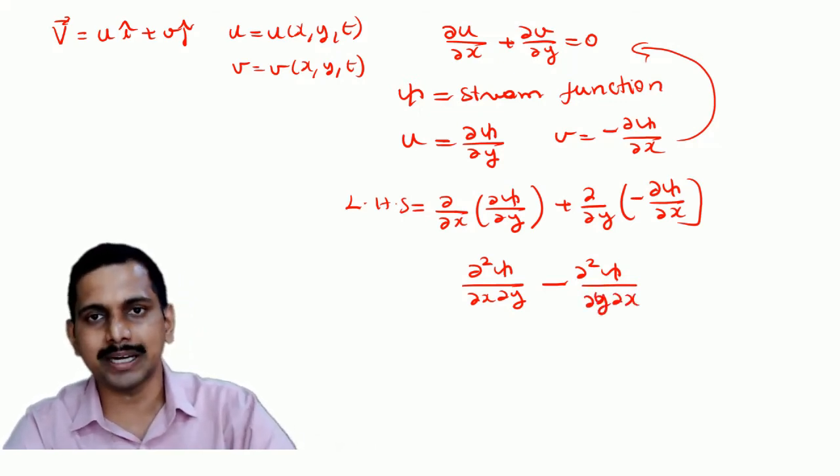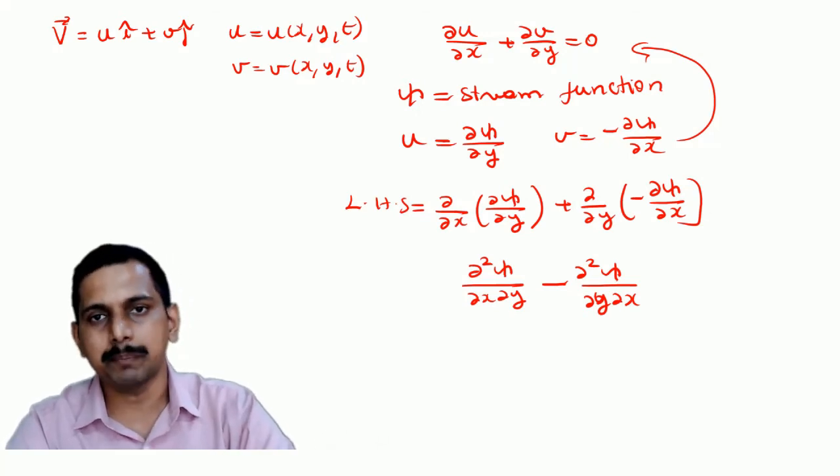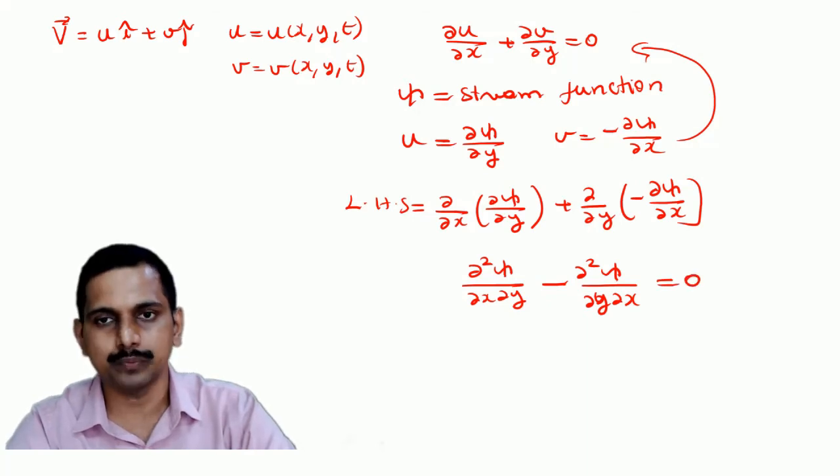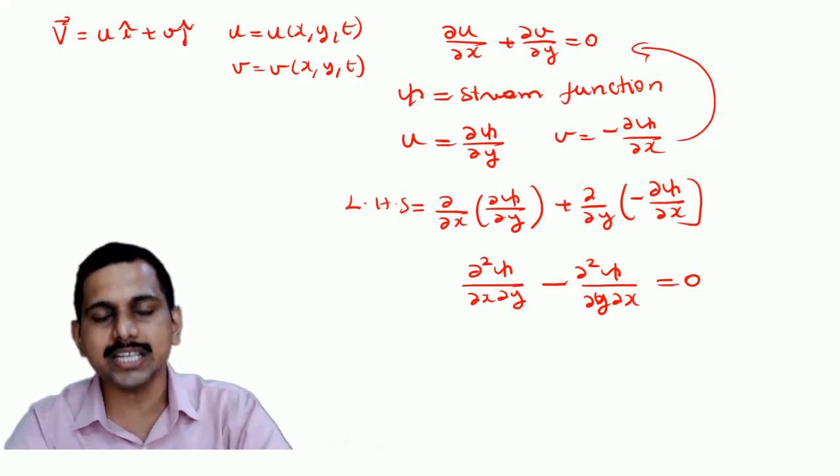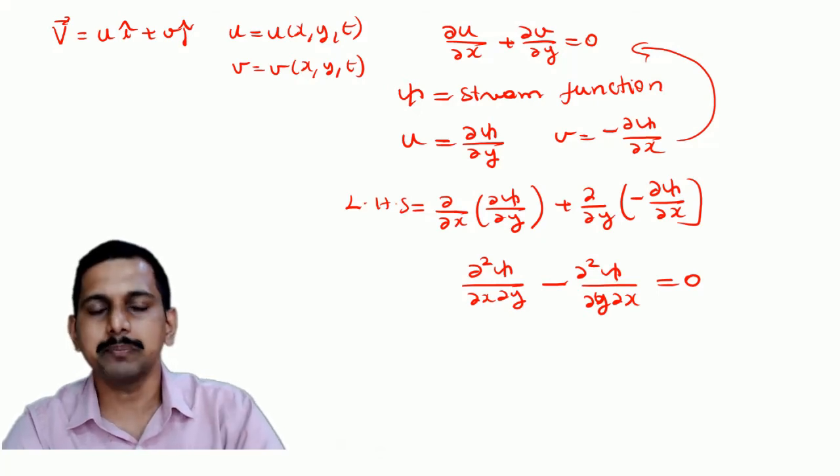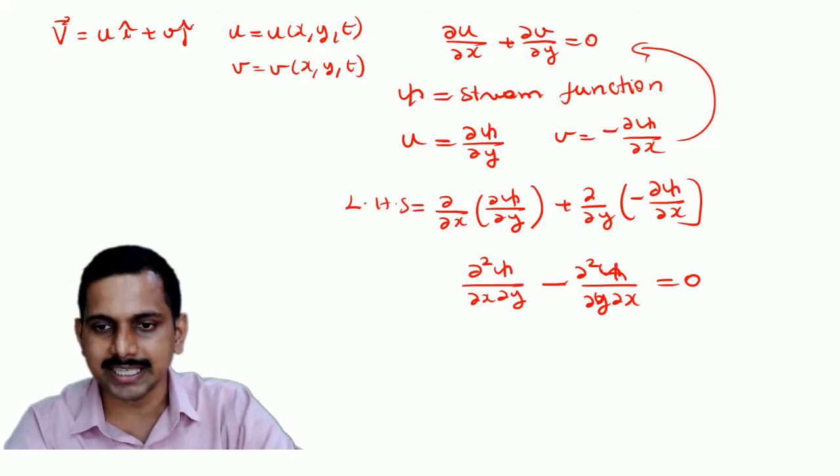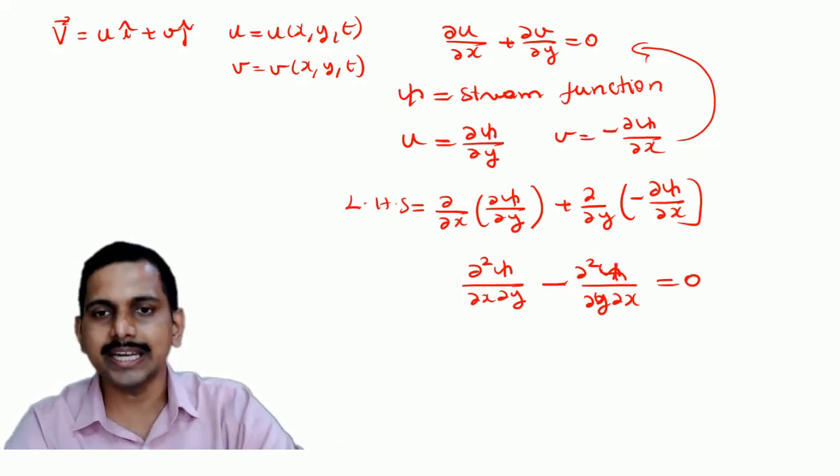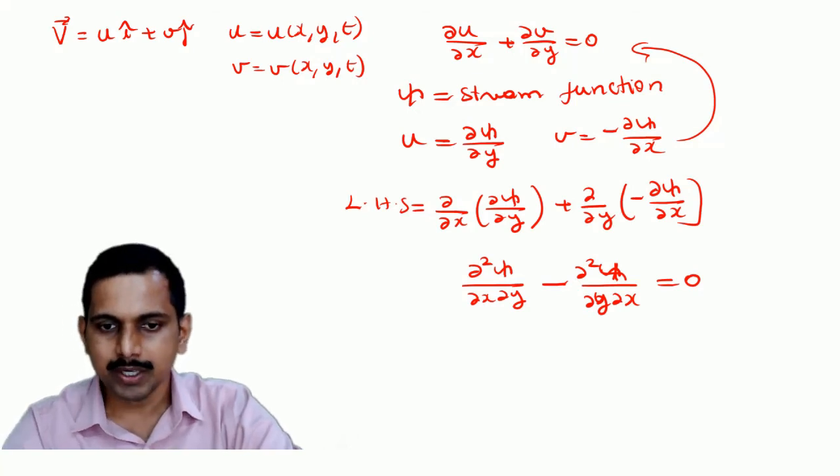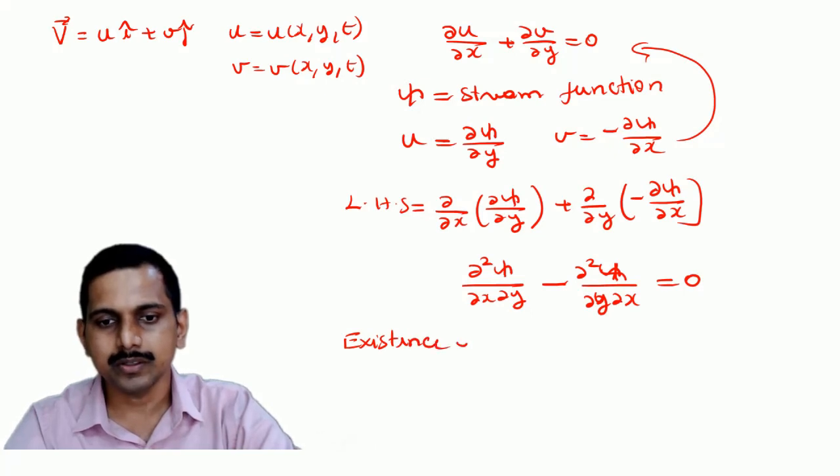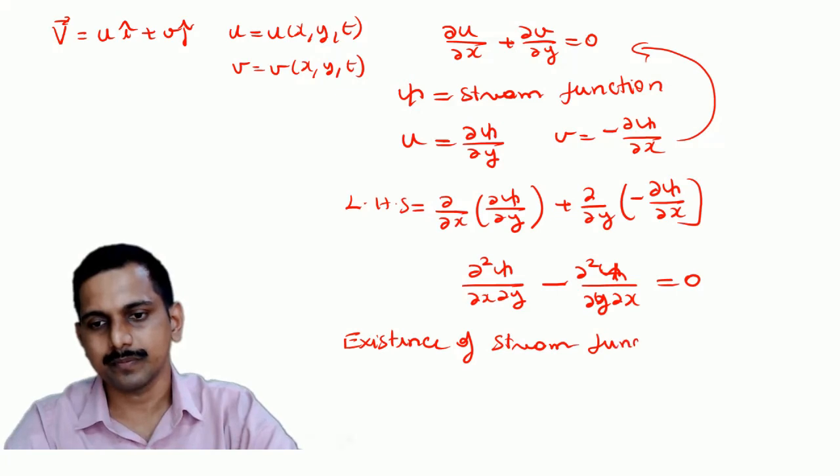If it is continuous, it doesn't matter which way we do the partial differentiation. So this is equal, so this will go to 0. So now if there is existence of stream function, it means it satisfies the continuity equation. So if stream function exists at a point, then that satisfies the continuity equation. Existence of stream function satisfies continuity equation.